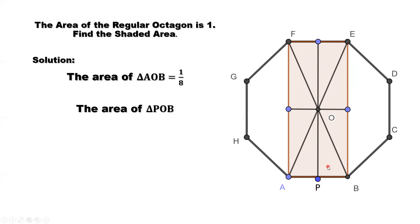The area of the smaller triangle, triangle POB, equals one half of the big triangle in area. Therefore, the area of this little triangle, triangle POB, is one half times one-eighth. One-eighth is the area of the big triangle, triangle AOB.